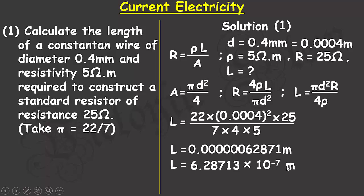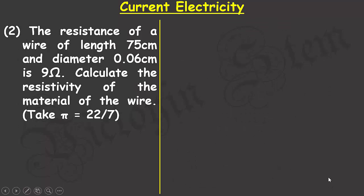Rounding to one decimal place, the length is 6.3 × 10⁻⁷ meters. That brings me to the end of the first problem. The second problem is similar to the first, except in the second problem I'm expected to find the resistivity of the wire.